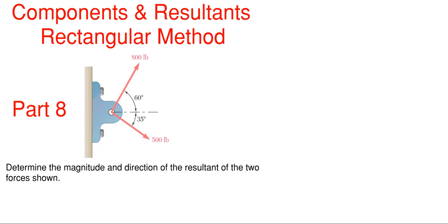What we're going to be covering here today in this video is statics components and resultants, and we are going to use the rectangular method to solve this problem. We are tasked with determining the magnitude and the direction of the resultant between two forces shown on this bracket: we have 800 pounds which is 60 degrees off the horizontal, and then 500 pounds which is 35 degrees off the horizontal.